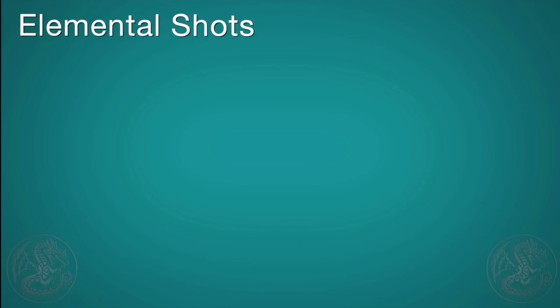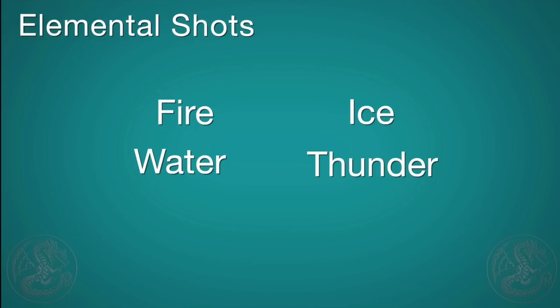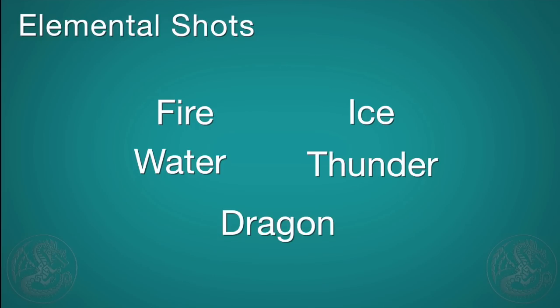There are five types of elemental shots that a bowgun can use: fire, water, ice, thunder, and dragon. Dragon is a bit special and not really grouped with the others, so I will cover that separately. When I refer to elemental shots you can just assume that I'm talking about fire, water, ice, or thunder.